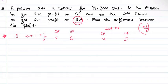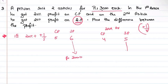A person sold two articles for Rs.3000 each and the selling price is Rs.3000 each.